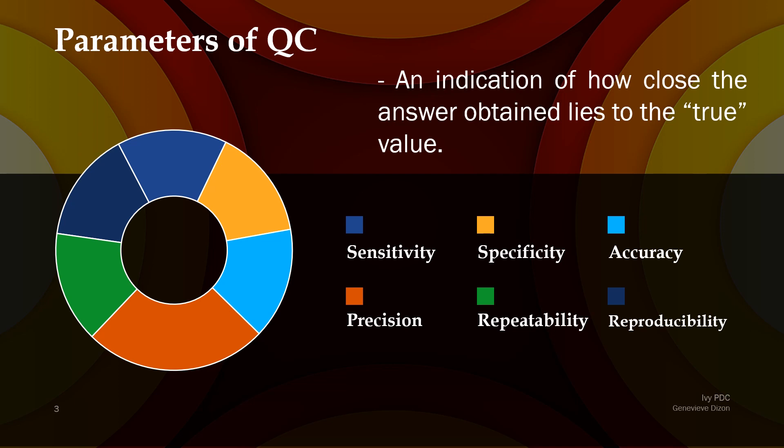Let's now discuss the different parameters of quality control. I'll be giving different definitions, and then you'll try to see which one of the six parameters we are referring to. The first one is an indication of how close the answer obtained lies to the true value. Our clue word here is true value. True value refers to the value consistent with a given quantity — it is a known value.